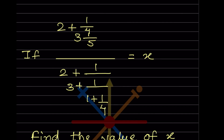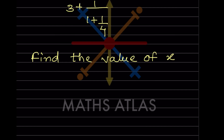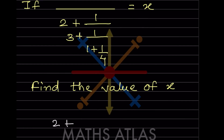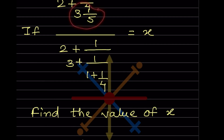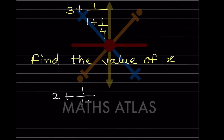Let us do this step by step. In this type of question, you always have to solve the inner part first. Let us look at the numerator first. We have a mixed fraction: 3 and 4/5. That means 3 multiplied by 5 gives 15, plus 4 is 19, so 3 and 4/5 equals 19/5.